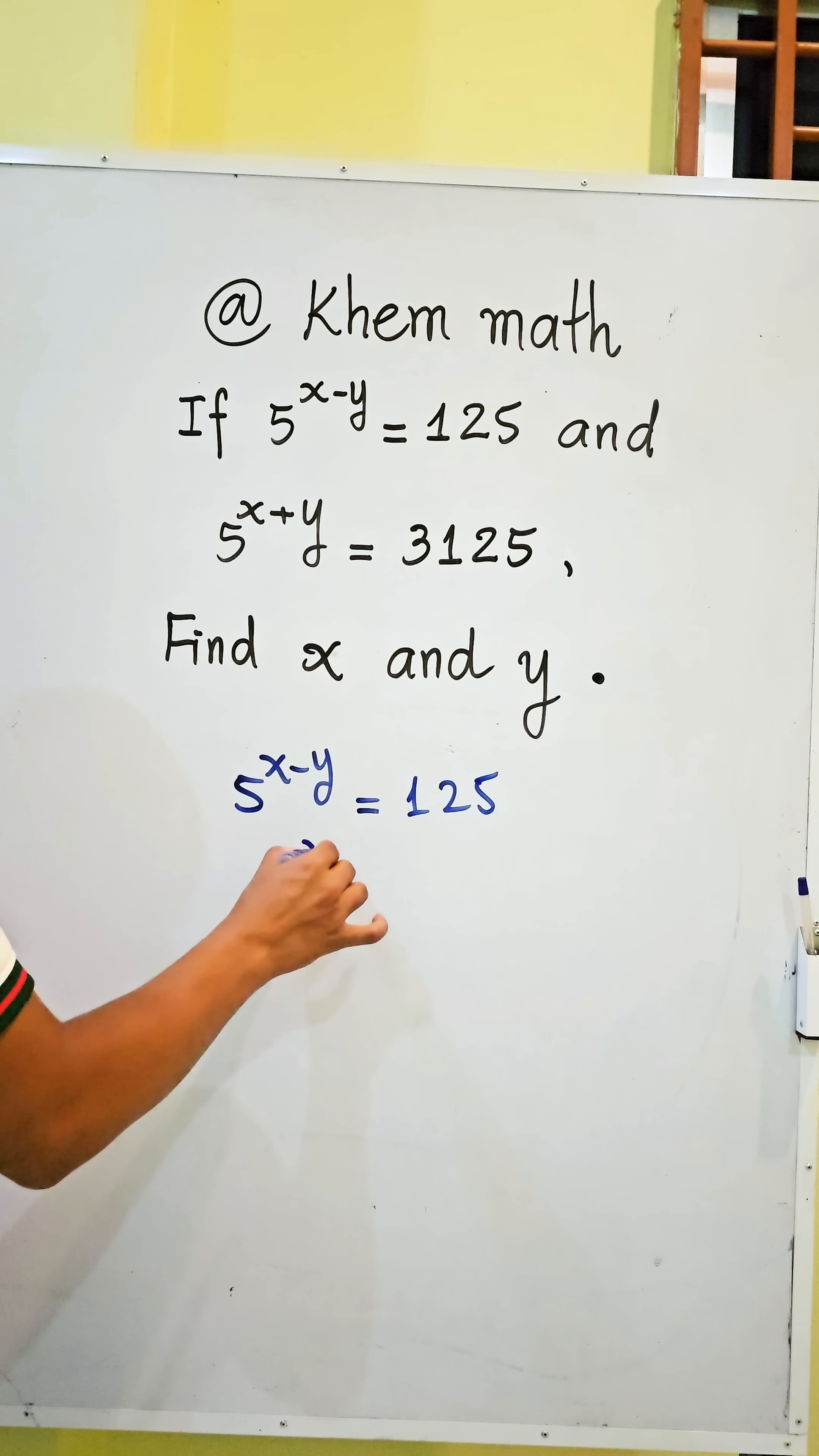So 5 power x minus y equals 5 power 3. The exponents have the same base, so we get exponent equals exponent. We get x minus y equals 3.